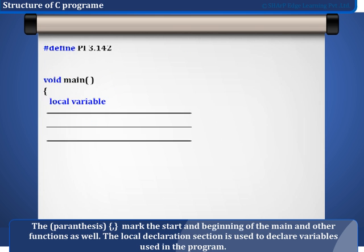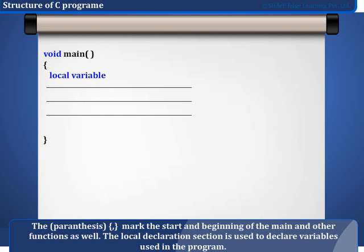The parentheses mark the start and end of the main and other functions as well. The local declaration section is used to declare variables used in the program.